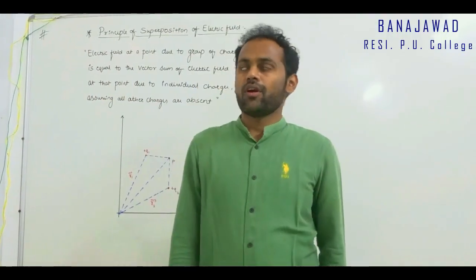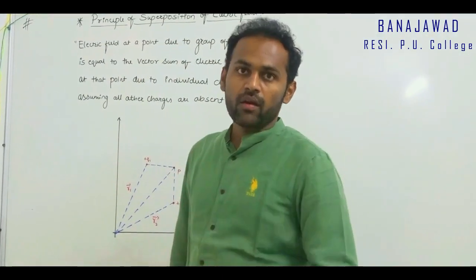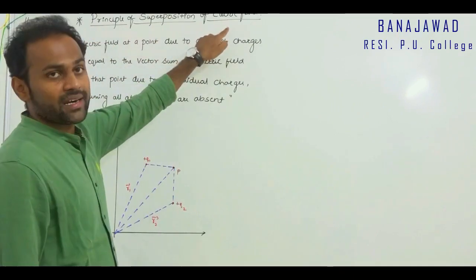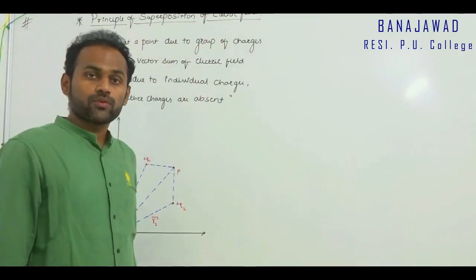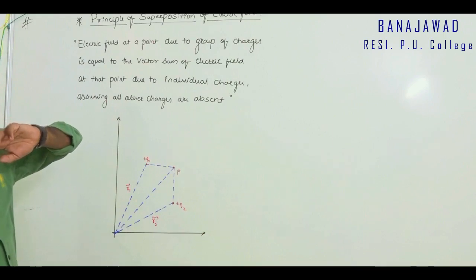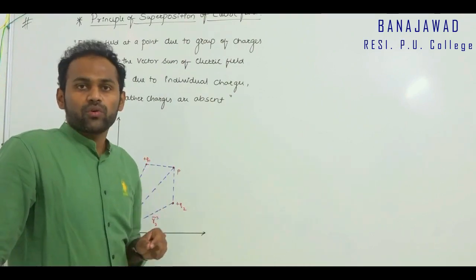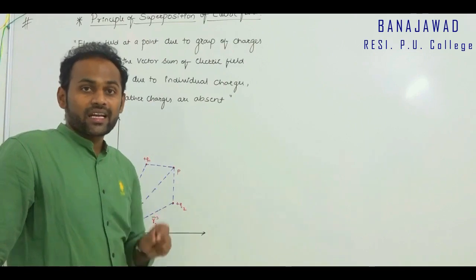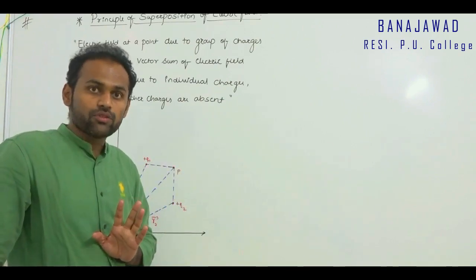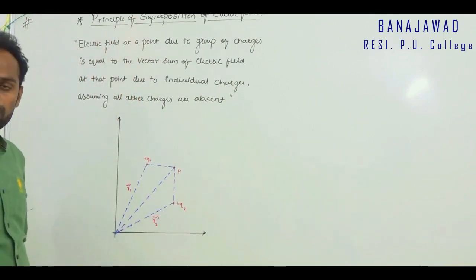Next we will go for another derivation called the Principle of Superposition of Electric Fields. We have already discussed the principle of superposition in electric forces. This is now the principle of superposition of electric field. The statement is: the electric field at a point due to a group of charges is equal to the vector sum of the electric field at that point due to individual charges, assuming all other charges are absent.